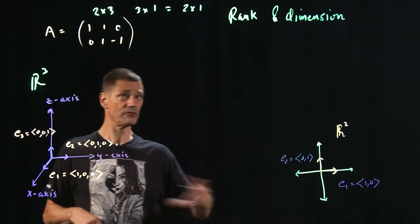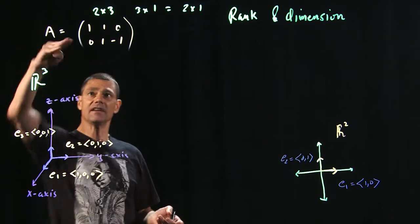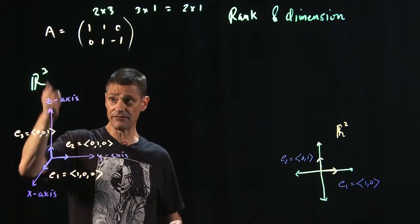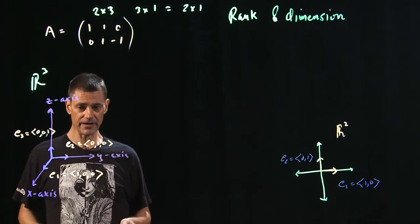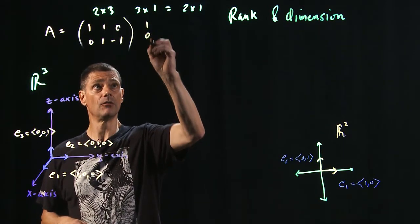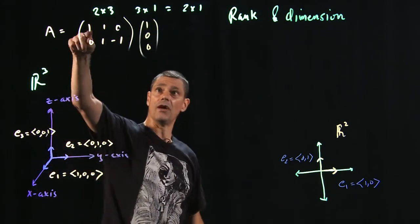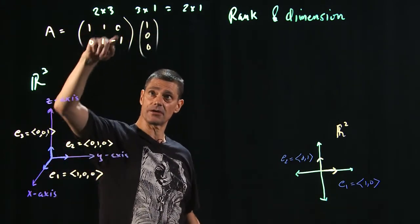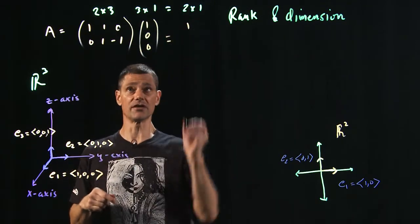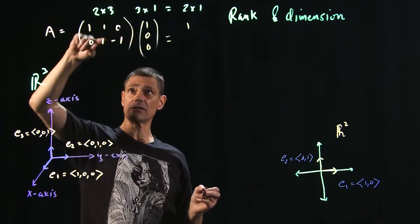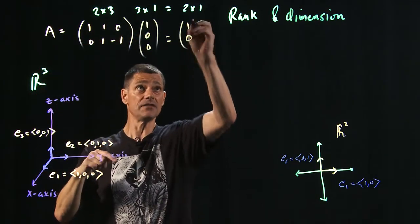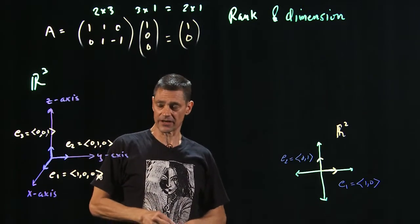So I did a couple, but I want to show you the computation. What is this matrix going to do to these unit vectors that define all of R³? Well, let's see. What happens if we multiply it by E1? 1, 0, 0. So 1 times 1 is 1. 1 times 0 is 0. 0 times 0 is 0. So the first one is 1. 0 times 1 is 0. 1 times 0 is 0. Minus 1 times 0 is 0.